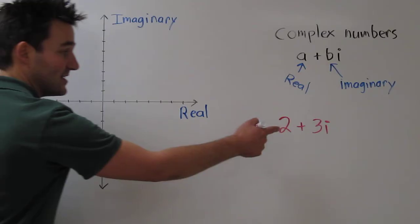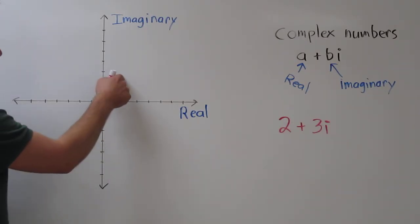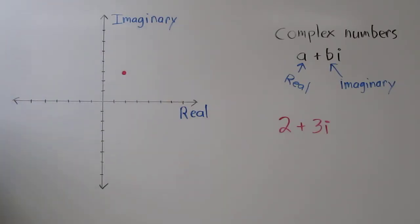That means we plot this complex number by going over 2 on the real axis, and up 3 on the imaginary axis. So this complex number is right there.